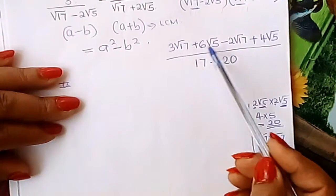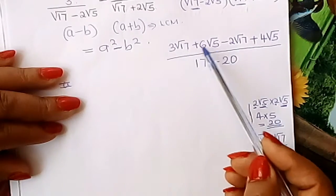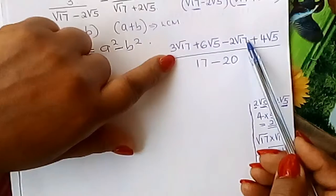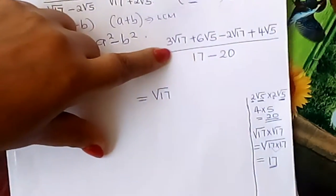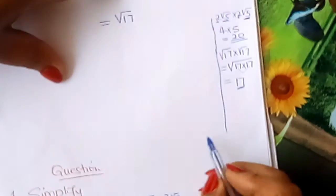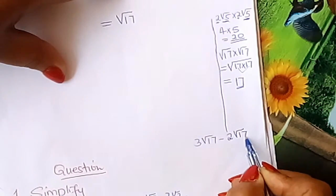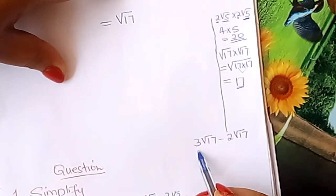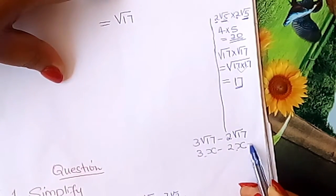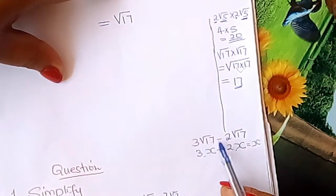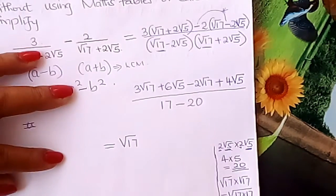3 root 17 minus 2 root 17 — what does that give you? It's just like 3x minus 2x which gives you x. So the same thing: 3 root 17 minus 2 root 17 gives you root 17.